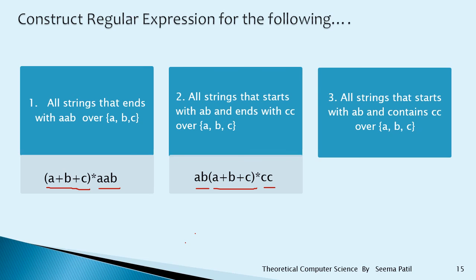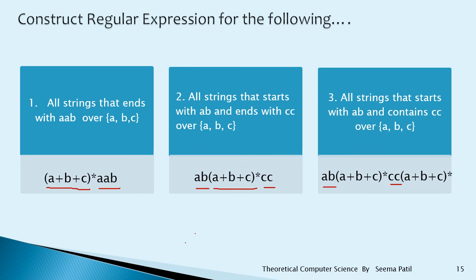Next: all strings that start with AB and contain CC over {A, B, C}. Write AB first. The string must contain CC somewhere, so before CC there can be any number of ABC's, and after CC there can also be any number of ABC's. The regular expression is AB(A + B + C)*CC(A + B + C)*.